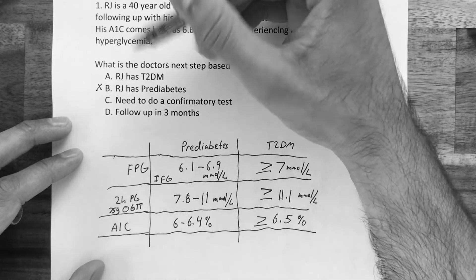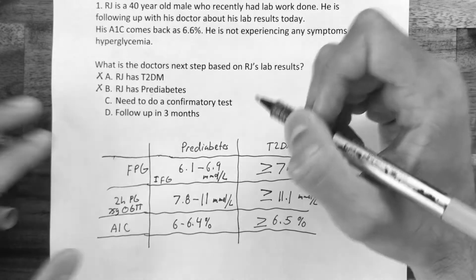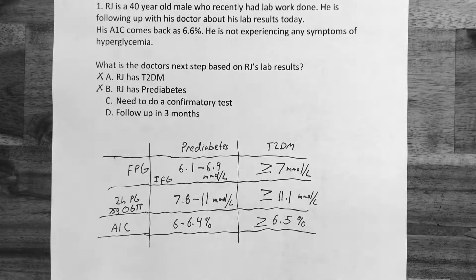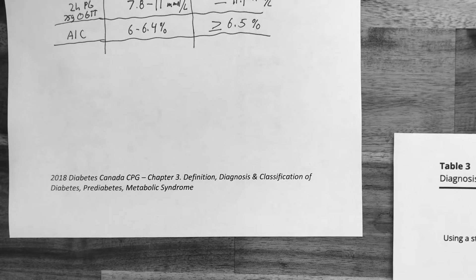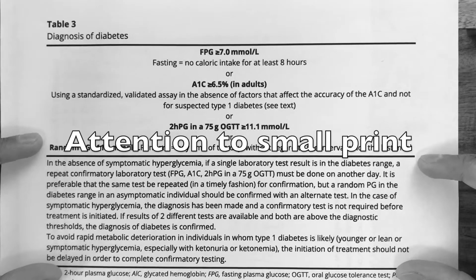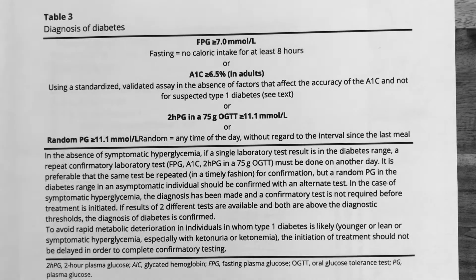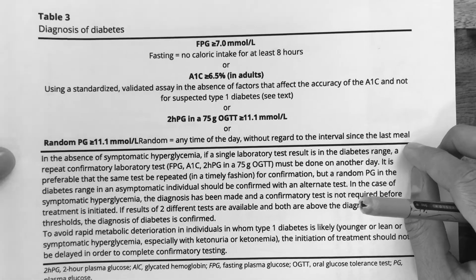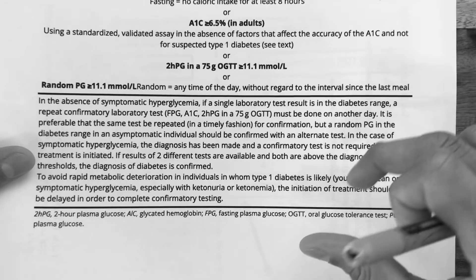Actually, that's not right. The correct answer is C — we need a confirmation test. Let me show you Table 3, 'Diagnosis of Diabetes,' from Chapter 3: Definition, Diagnosis and Classification of Diabetes, Prediabetes and Metabolic Syndrome in the Diabetes Canada Clinical Practice Guidelines. The fine print in this table has important details explaining when to do a confirmation test. Let's use a flow chart to make this easier to follow.